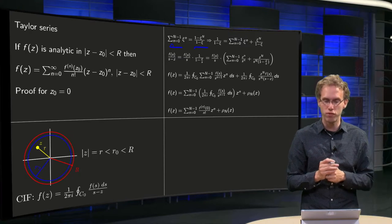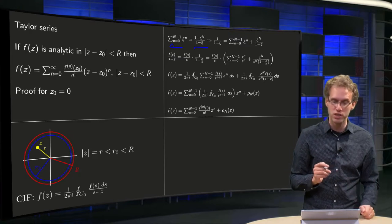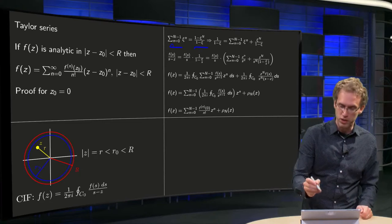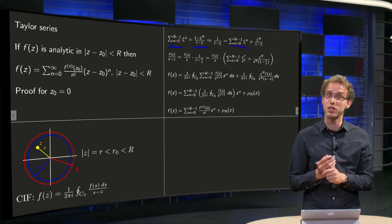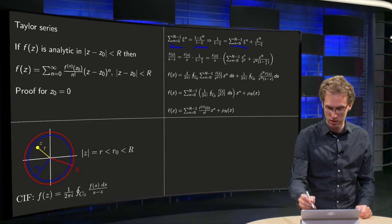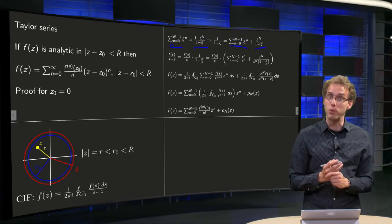So we can solve for 1 over 1 minus ξ. 1 over 1 minus ξ is the same sum, and then I just subtract ξ to the power N over 1 minus ξ over here. Why do we do that?